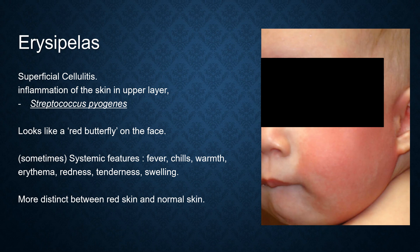Erysipelas is a superficial cellulitis — an inflammation of the upper layer of the skin. It is caused by Streptococcus pyogenes. As you can see, it looks like a red butterfly on the face. Sometimes systemic features come together, such as fever, chills, erythema, redness, tenderness, and swelling. It has a more distinct border between red skin and normal skin.